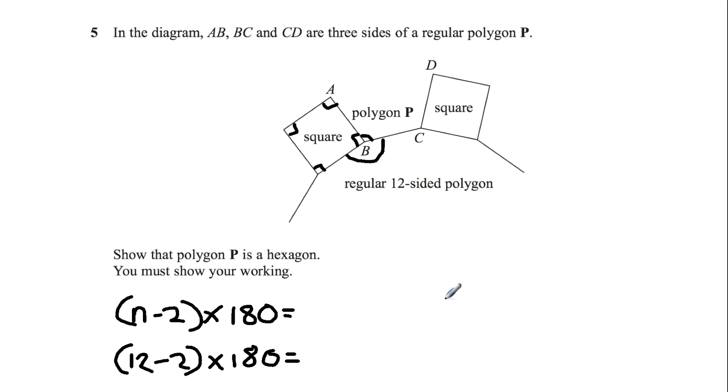And we know that a point around a circle adds up to 360. So to find this angle we're going to be doing 360 minus 240 degrees, which equals 120 degrees.